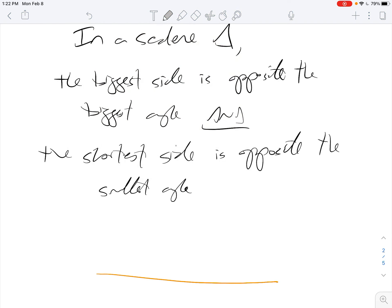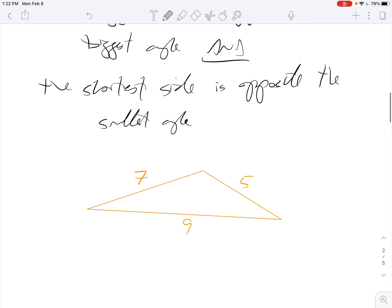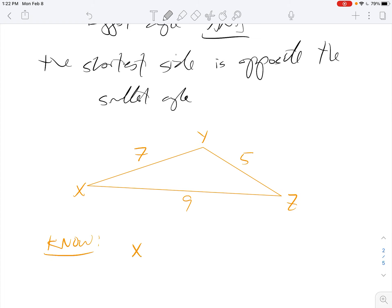And by process of elimination, the middle side is opposite the middle angle. So for example, if I just draw a triangle like so. And maybe we have this is five, and this is seven, and this is nine. And let's say X, Y, Z. What we would know is that the longest side is segment XZ.